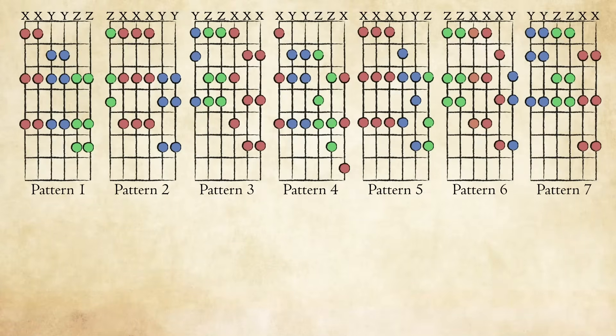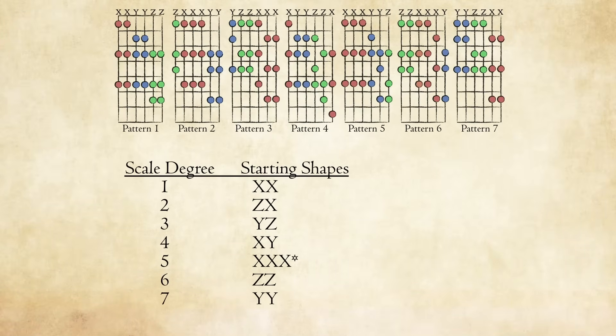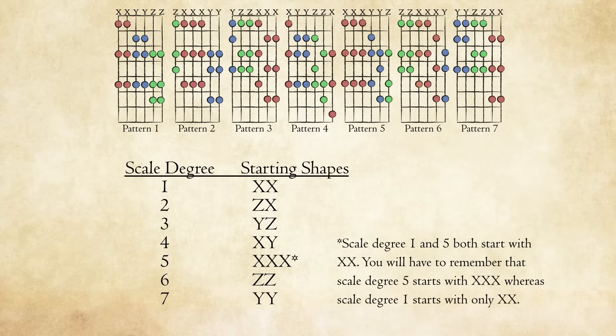Here is a chart outlining the first two finger shapes and scale degree for each overall pattern. Again, you may want to pause the video here and take a screenshot or write this down. Once you understand how the patterns are constructed, this is the only thing you need to memorize to be able to play every scale and mode in every position. Note that both scale degree 1 and 5 start with XX. You'll have to remember that scale degree 5 starts with three Xs, whereas scale degree 1 starts with only two.